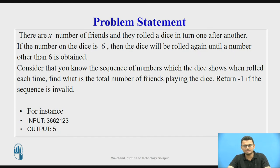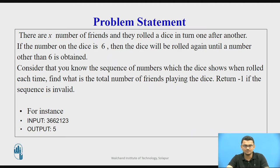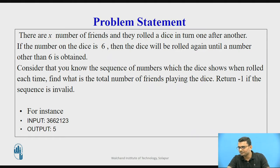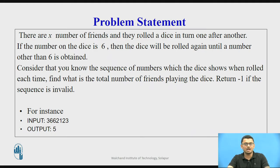So what exactly is the problem statement for today's video lecture? Consider there are X number of friends playing a game involving a dice. A dice is a cube and on every surface there is a number from 1 through 6. These X friends roll the dice in turn, one after another. If the number on the dice is 6, the dice is rolled again by the same person until a number other than 6 is obtained.